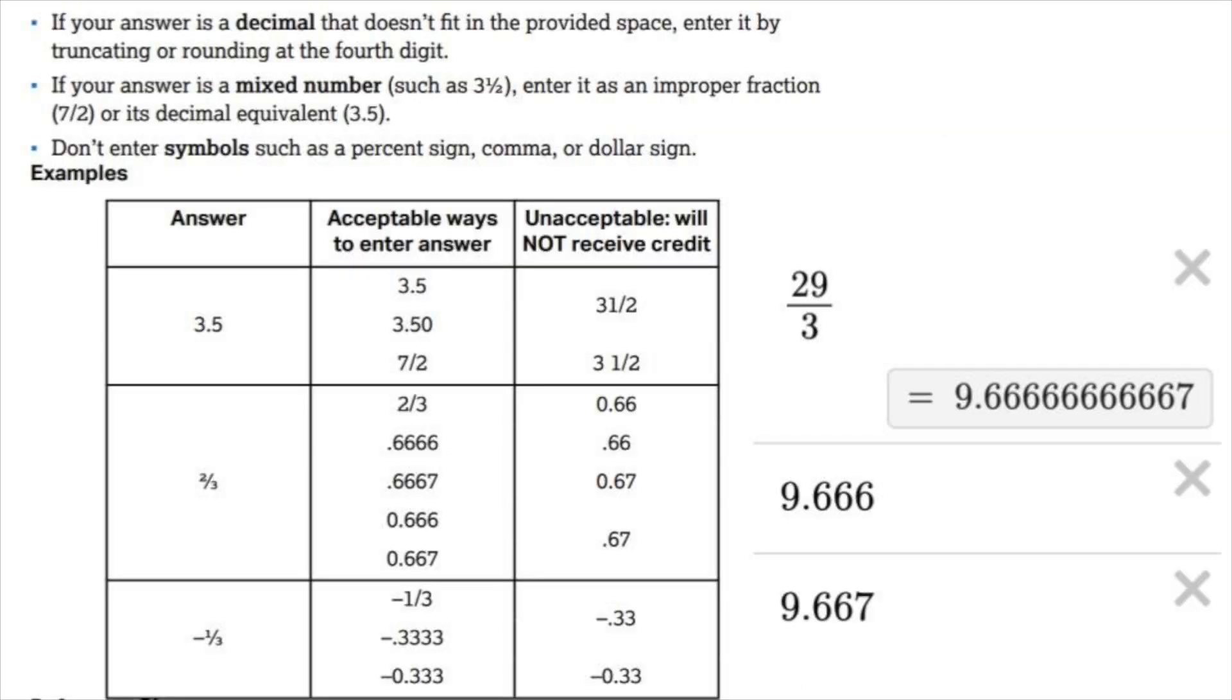Your safest bet is to grid 29 thirds because if you make a rounding error it will be considered an incorrect answer.